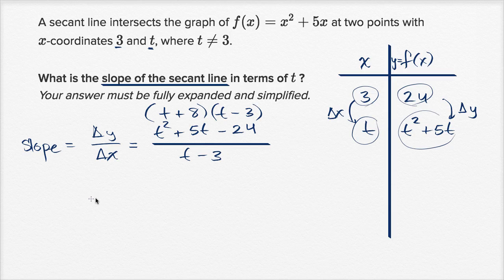And so we could say this is going to be equal to, if we cancel out the t - 3s, or we divide the numerator and the denominator by t - 3, it's going to be equal to t + 8.